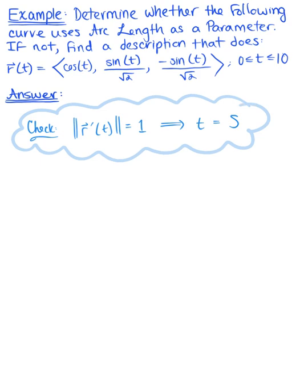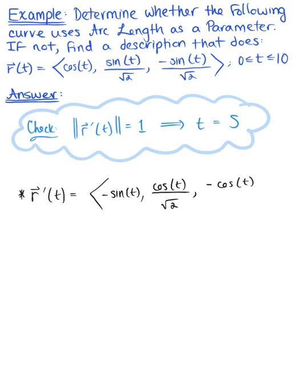Using that given parametric description, we start by finding the tangent vector r prime of t. Differentiating this vector valued function, we are left with the vector: minus sine of t for the first component. The second component differentiates to cosine of t divided by the square root of 2. And minus sine of t divided by the square root of 2 differentiates to minus cosine of t divided by the square root of 2.